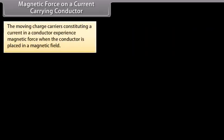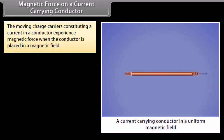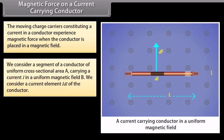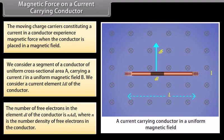Magnetic Force on a Current Carrying Conductor. The moving charge carriers constituting a current in a conductor experience magnetic force when the conductor is placed in a magnetic field. We consider a segment of a conductor of uniform cross-sectional area A carrying a current I in a uniform magnetic field B. We consider a current element I·DL of the conductor. The number of free electrons in the element DL is N·A·DL, where N is the number density of free electrons.